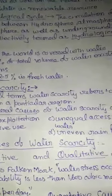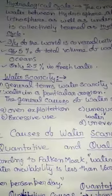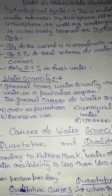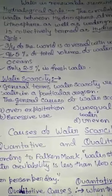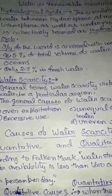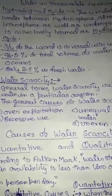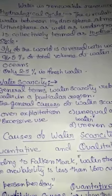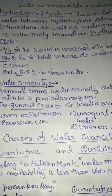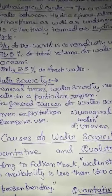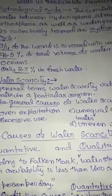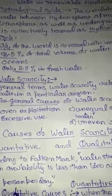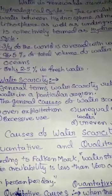Three-fourths of the world is covered with water. 96.5% of the total volume of water exists as ocean water, which is known as saline water. Only 2.5% is fresh water. Saline water is the water present in oceans, containing a large percentage of salt and other minerals. Fresh water is present on the Earth's surface in the form of rivers, ponds, glaciers, etc.